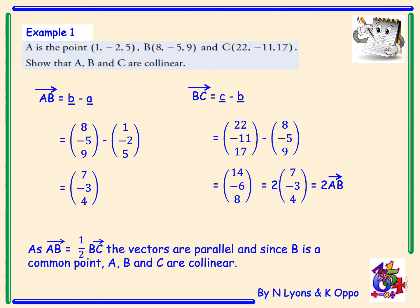So our sentence to go at the end of this question would be: as AB equals one half of BC, the vectors are parallel, and since B is a common point, A, B and C are collinear.